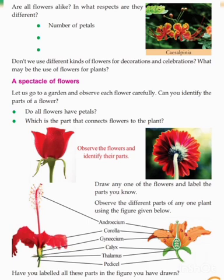Corolla is another part of the flower. Gynesium is the female reproductive organ. Calyx is also a part of the flower.